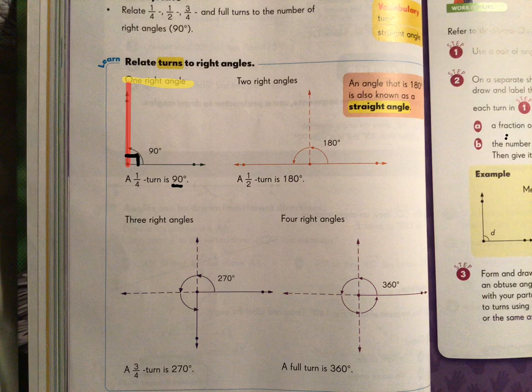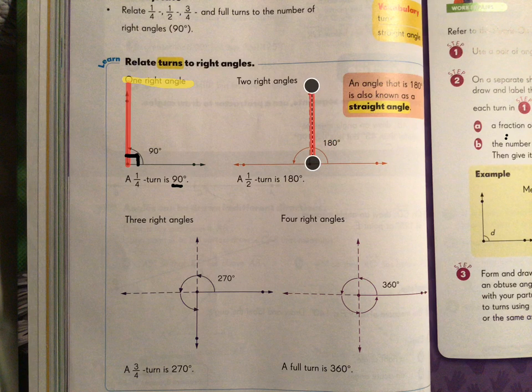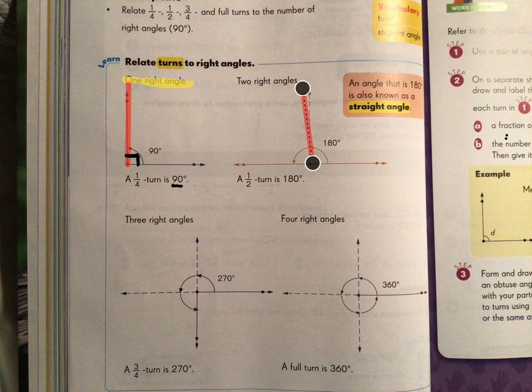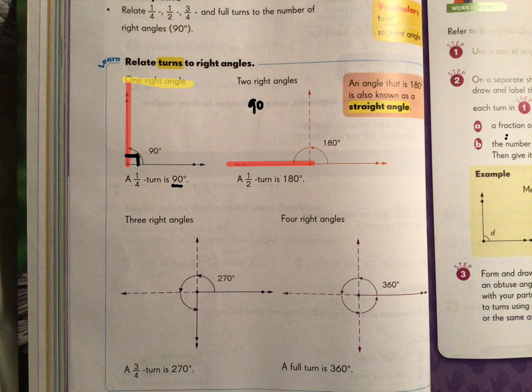If we do a half turn, so here we are starting out on this ray. Here's one quarter turn. That's 90 degrees. So another quarter turn would be another 90 degrees. Well, 90 degrees plus 90 degrees gives us 180 degrees.